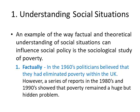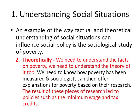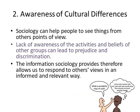An example of the way factual and theoretical understanding of social situations can influence social policy is the sociological study of poverty. Factually, in the 1960s in the United Kingdom, politicians believed that they had eliminated poverty throughout the country. However, a series of reports in the 1980s and 1990s showed that poverty remained a huge but hidden problem within society. Theoretically, we need to understand how poverty has been measured and sociologists can offer explanations based on their research — why it happens, how it can be prevented, or how we can reduce it over time. The result of these pieces of research led to policies such as the minimum wage and tax credits being introduced by the New Labour government in the late 1990s.